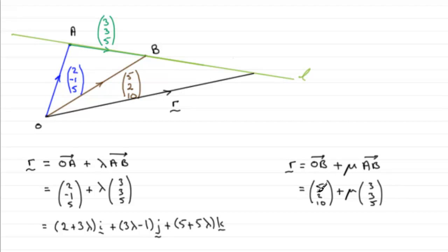So it's up to you, you can use any of these versions, you could even use B to A, it doesn't matter, as long as your vector here is parallel to the line. And whilst we're here, just in case you're still unsure about vector equations of lines.